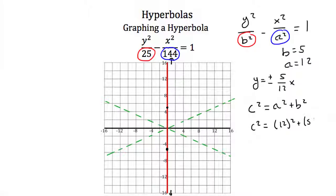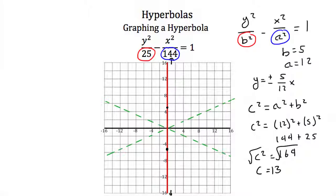12 squared is 144, 5 squared is 25, so c squared equals 169. Taking the square root gives c equals plus or minus 13, but since c is a distance it's just positive 13. Going 13 units away from the center along the transverse axis locates our foci.